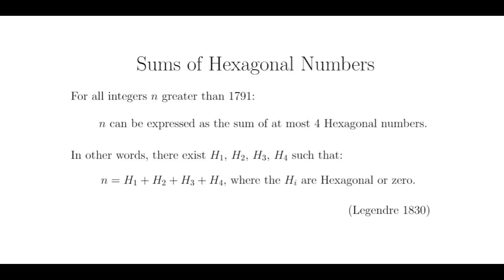Another interesting property is that any integer greater than 1791 can be written as the sum of at most 4 hexagonal numbers. This was actually proven in 1830 by the famous mathematician Adrien-Marie Legendre, after whom the Legendre symbol was named.